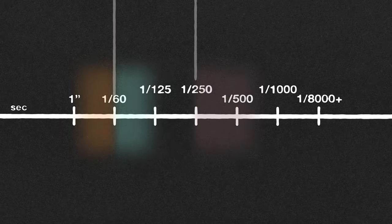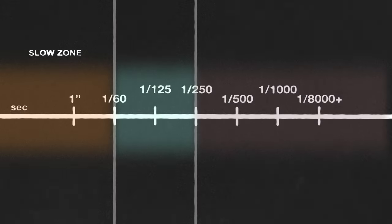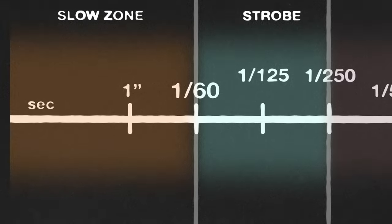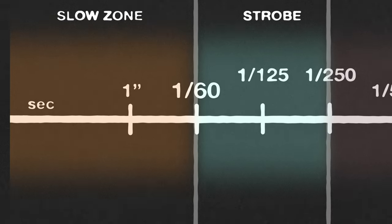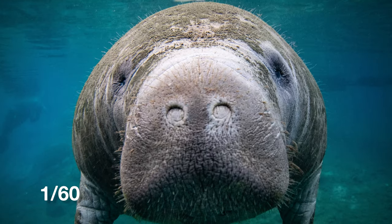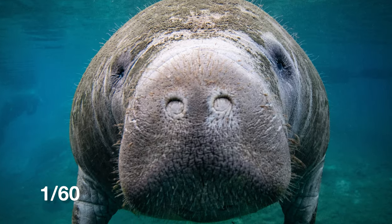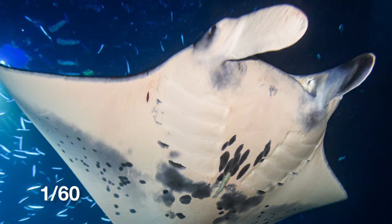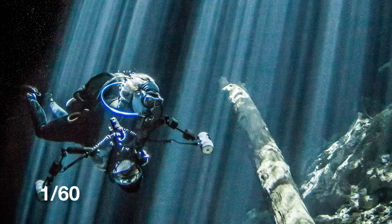Different cameras have different shutter speed ranges and they vary. Most of this range is not very usable underwater. On the slow end of shutter speeds, a 60th of a second is the common lower limit for handheld photography. At these slower shutter speeds, small movements of the camera will start to distort your image, and fast-moving subjects will also have a trail of motion blur behind them.